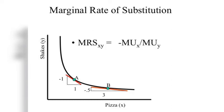Next is the Marginal Rate of Substitution, or MRS. It measures how much of one good a consumer is willing to sacrifice to get one more unit of another good. The Law of Diminishing Marginal Rate of Substitution states that as more and more units of good X are consumed, the consumer will sacrifice less and less of good Y. This means MRS continuously falls — as we consume more of X, we sacrifice less and less of Y.